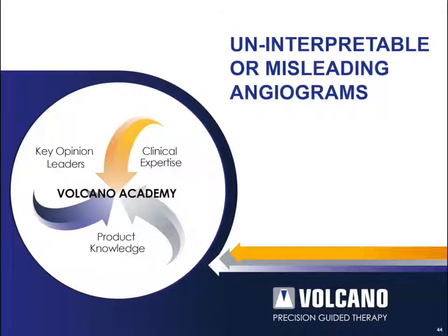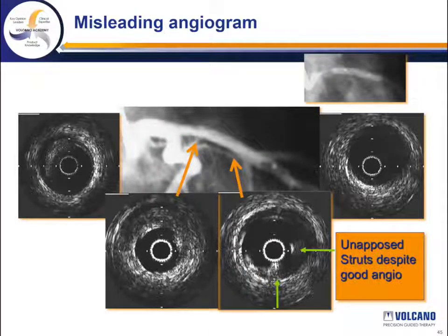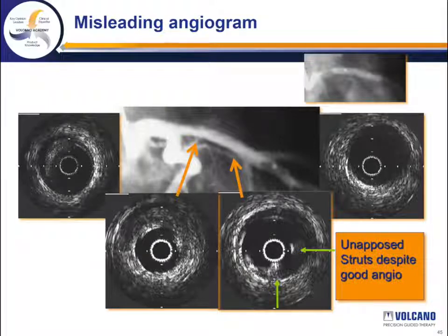Let's finish with uninterpretable or very misleading angiograms, which are just as problematic as ambiguous angiograms because you're really not sure what you can't see. Here's a very misleading angiogram: after stent placement, this proximal LAD looks wonderful by angiogram. However, IVUS pullback finds unopposed struts that are not visualized on the angiogram. This is not uncommon, especially if the vessel has a tapering or reverse-taper appearance and you were not appropriate in choosing the stent size. If you don't do IVUS afterwards, you will miss them.